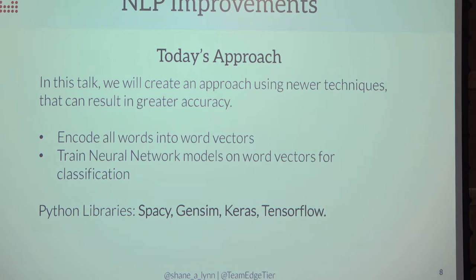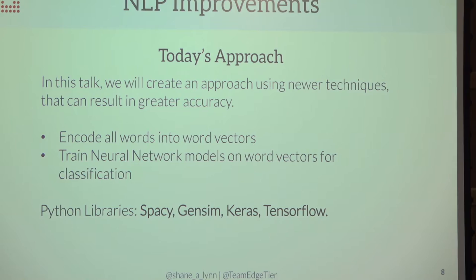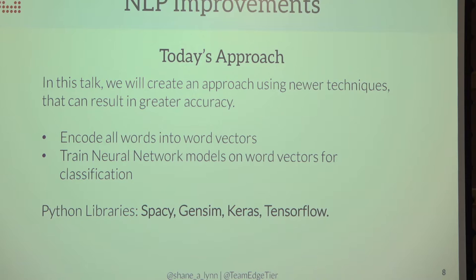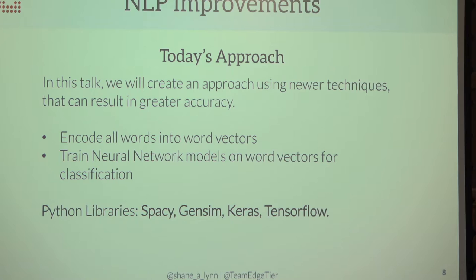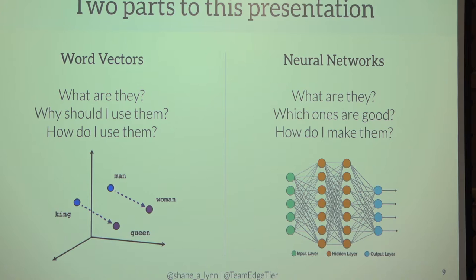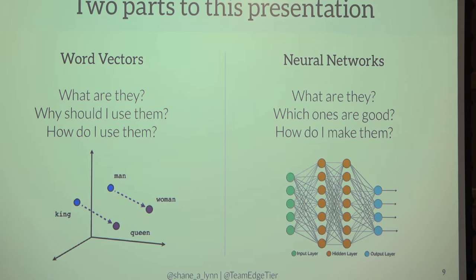In today's talk we're going to talk about a slightly different approach from using a bag of words. We're going to talk about using what are called word vectors and classifying those word vectors using neural networks. There was an excellent talk yesterday on word vectors by Marco. There are two parts to this presentation: first word vectors — what they are and why you should use them — then neural networks, what they are, why you should use them, and a very quick example.